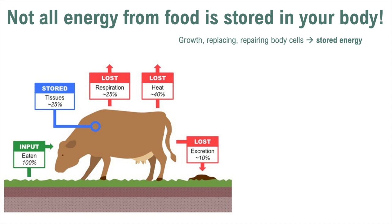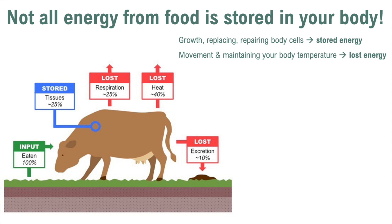When the energy in your food is used for growth or for replacing and repairing body cells, it becomes stored energy — because the energy that was first in your food is now stored in a molecule, in something solid, which could be fat tissue, muscle tissue, or new cells. The energy used for movement and maintaining body temperature is lost energy — it is used and then gone. When we look at ecosystems, we say that energy is lost.